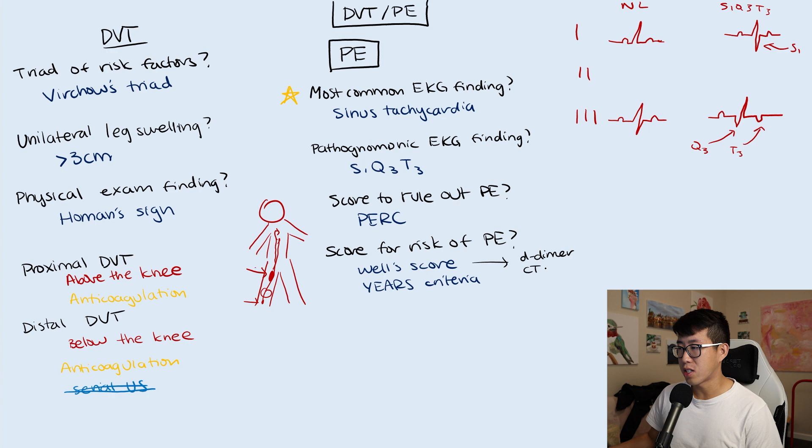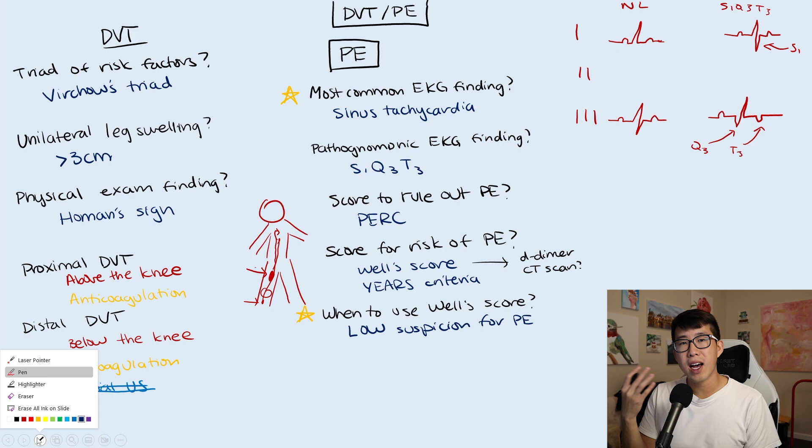Basically, what the Wells score tells you is: should I get a D-dimer to assess if this patient has a PE or should I go straight to a CT scan? The most common question people ask is what is the correct situation to get a Wells score and D-dimer? The only utility for a Wells score is if you have low suspicion for a PE. If you had high suspicion for a PE, you should just go straight to a CT scan. If you have high suspicion and calculate Wells and it's low telling you to get D-dimer, that's not useful because you still had high suspicion and you're still going to get that CT scan.